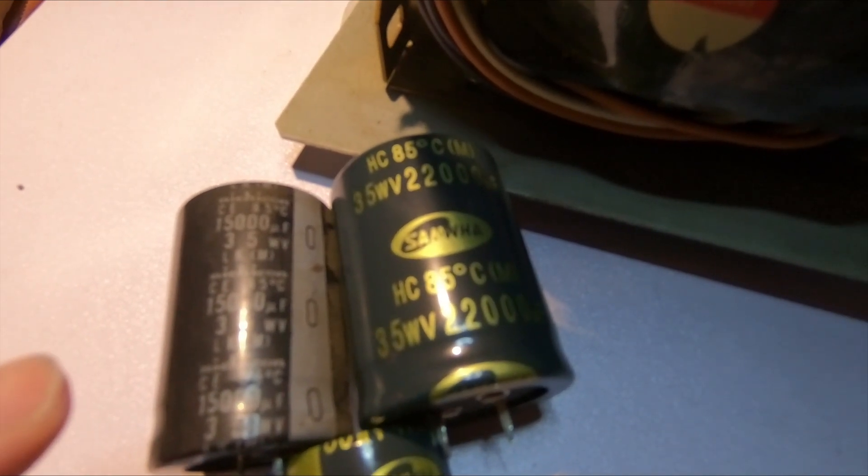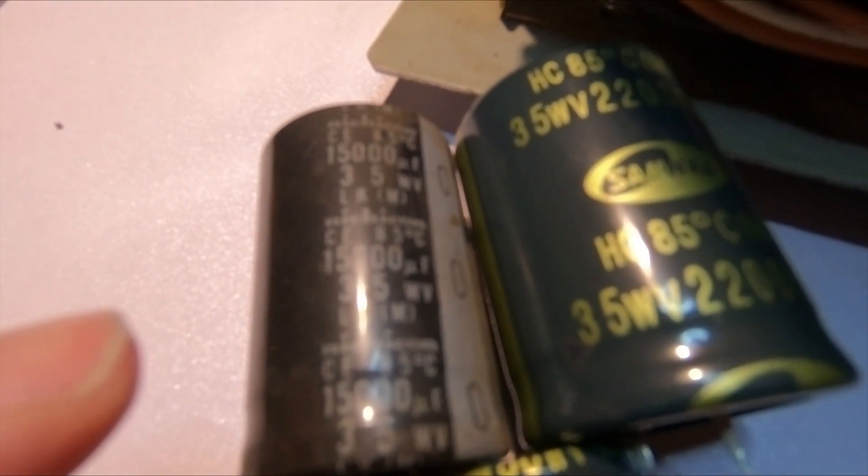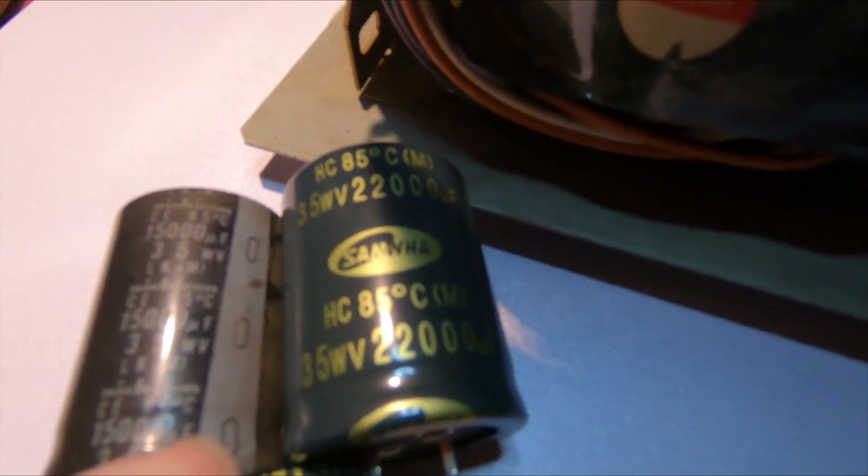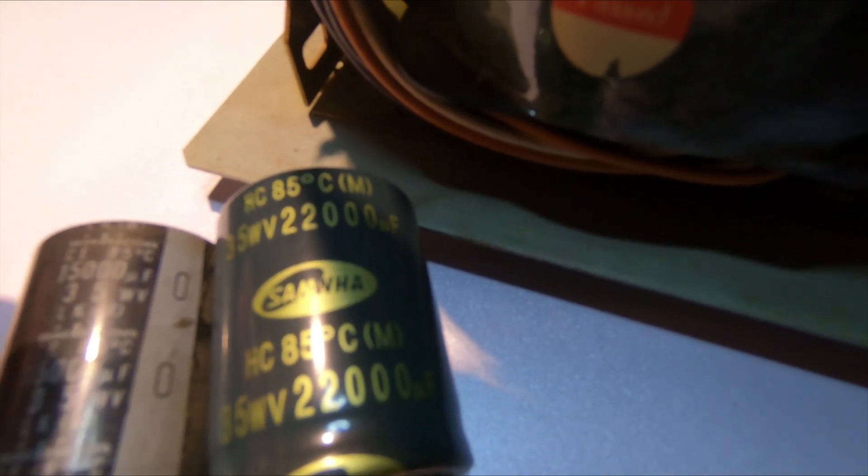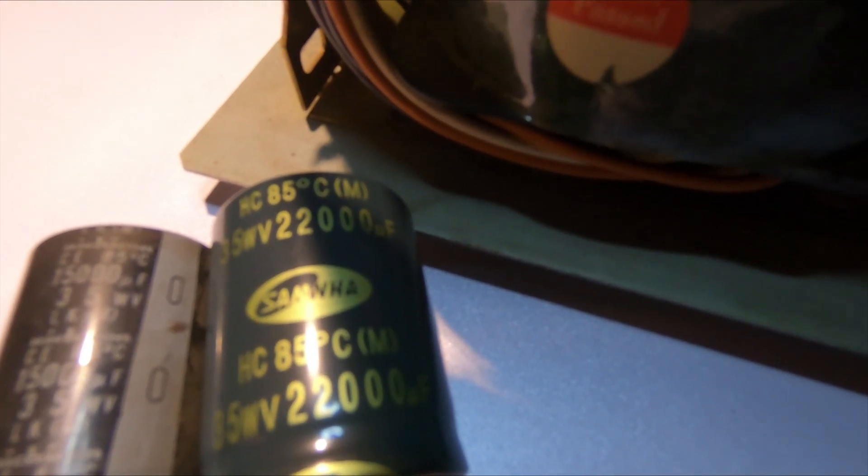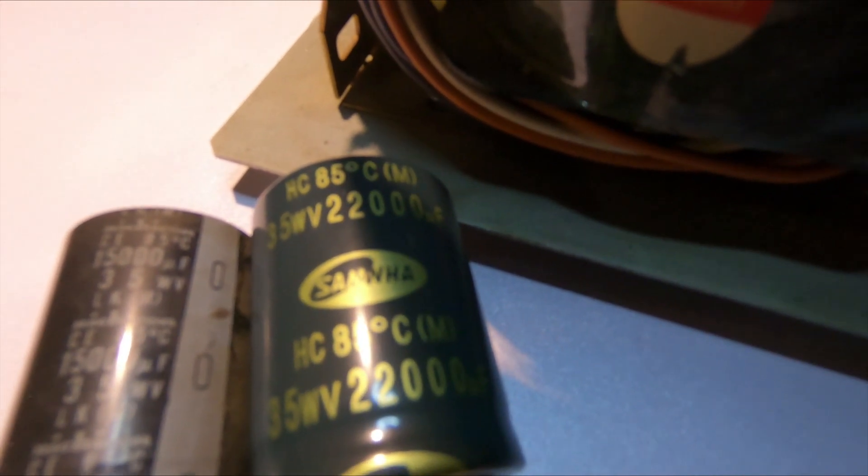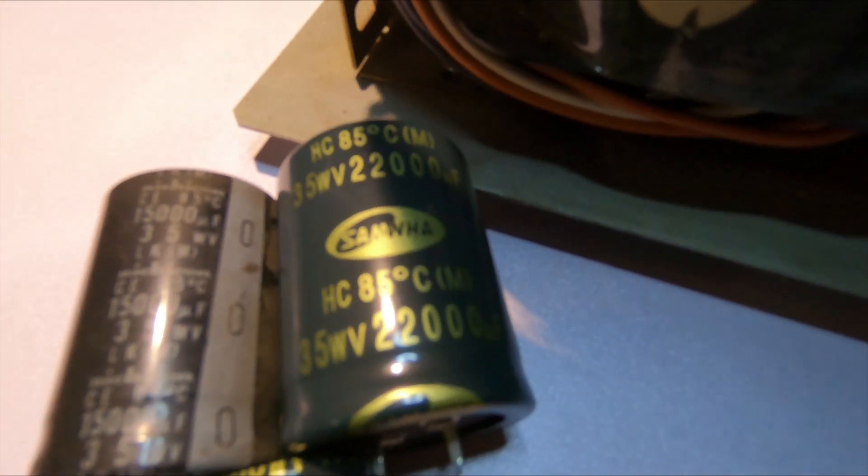Original capacitors are on the left. The first one was a 15,000 microfarad with a working voltage of 35 volts and I'm replacing that with a 22,000 microfarad capacitor with a working voltage of 35 volts. Like I said before, the higher capacitance won't matter in this function because it's just being used as a smoothing capacitor.